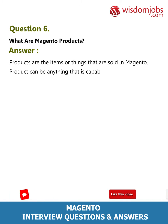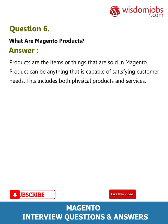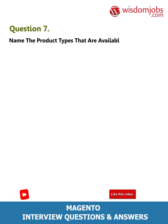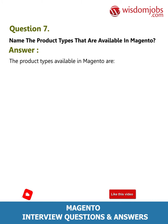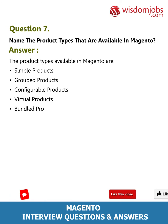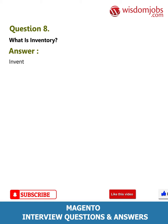A product can be anything that is capable of satisfying customer needs. This includes both physical products and services. Question 7: Name the product types available in Magento. Answer: The product types available in Magento are simple products, grouped products, configurable products, virtual products, bundle products, and downloadable products.